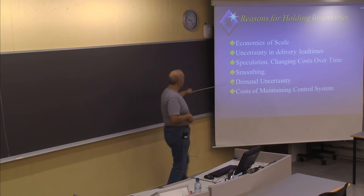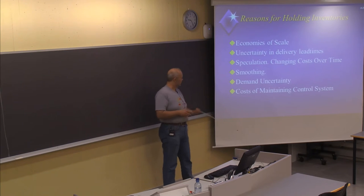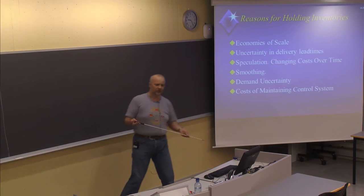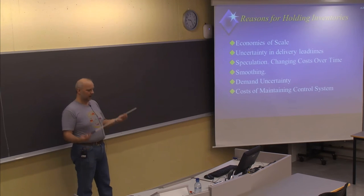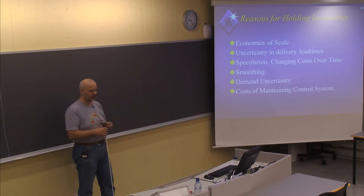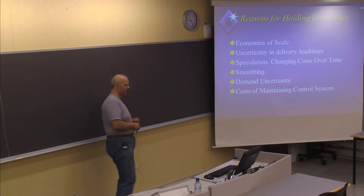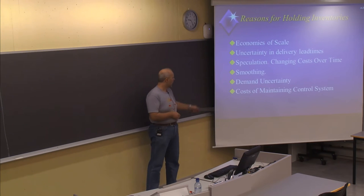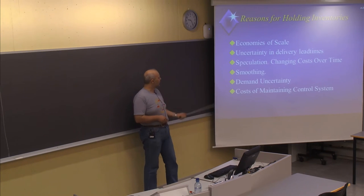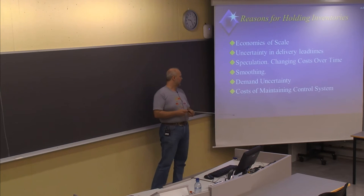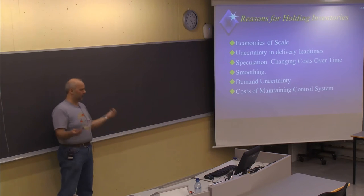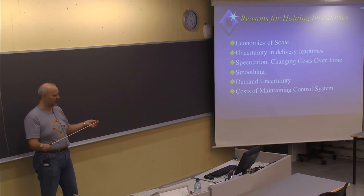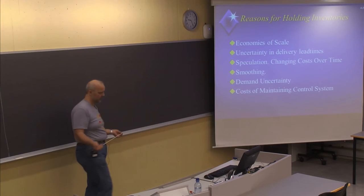Demand uncertainty is also important because you don't know exactly how much demand there will be in the coming periods. You should maybe have a larger stock to make sure you have enough to deliver for potential high demand. There might also be cost of maintaining what we call the control system — controlling or having an overview of the stock, knowing how many items of the different types you have on stock at any time.